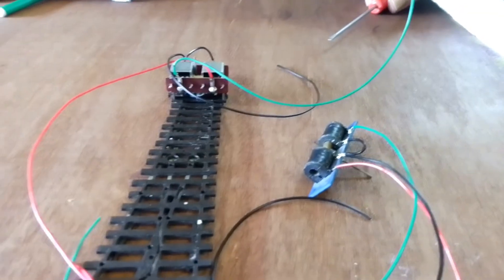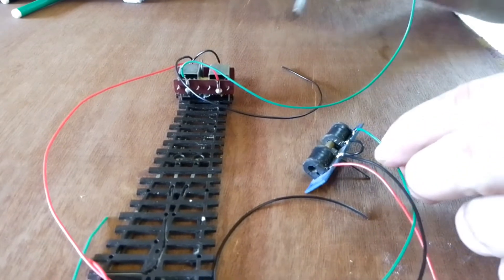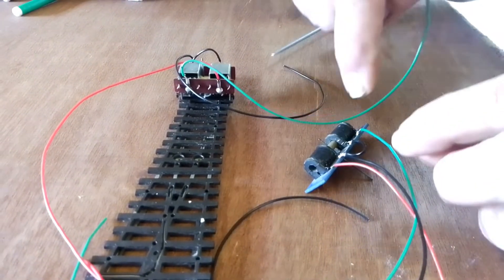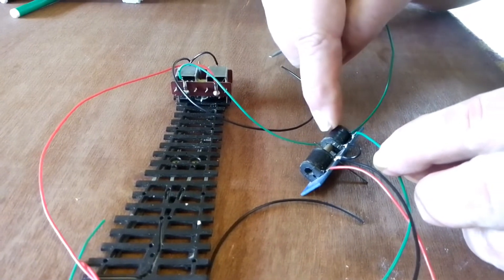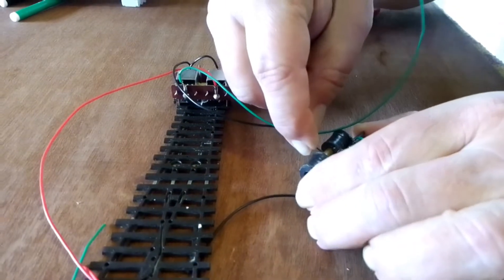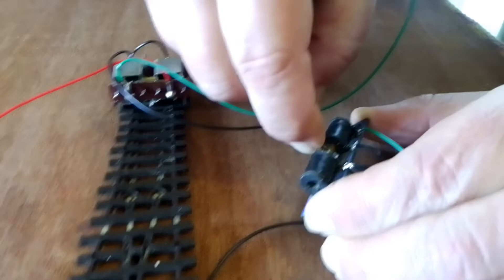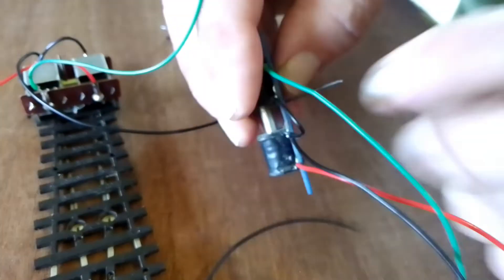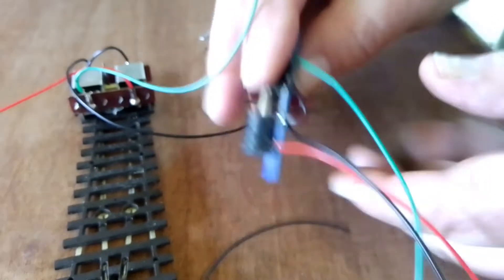They both work on the same principle. They have two electromagnets, one there and one there. When an electrical current flows through this electromagnet, they pull the rod between them across. This pin goes up into the point, the tie bar, and that moves it across.